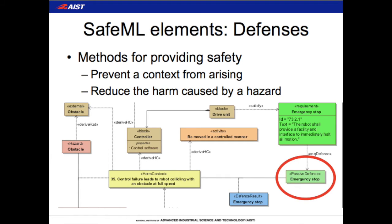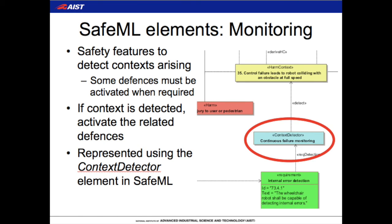This distinction between activation and non-activation is important for whether you need detectors, which are used to decide when to activate safety features. In SafeML, defences are represented using the active defence and passive defence elements, representing a safety feature in the design used to provide safety. Defences are related to the harm context because rather than targeting the hazard — which is always present — a defence targets a hazardous situation, either by trying to prevent that situation from occurring or to mitigate the harm caused when it does. We also have monitoring systems or detectors, used to determine when to activate active defences. These are very important because if you don't know when to activate your safety feature, it cannot provide safety at the critical moment. They detect when a hazardous situation is arising and then activate the related active defences.